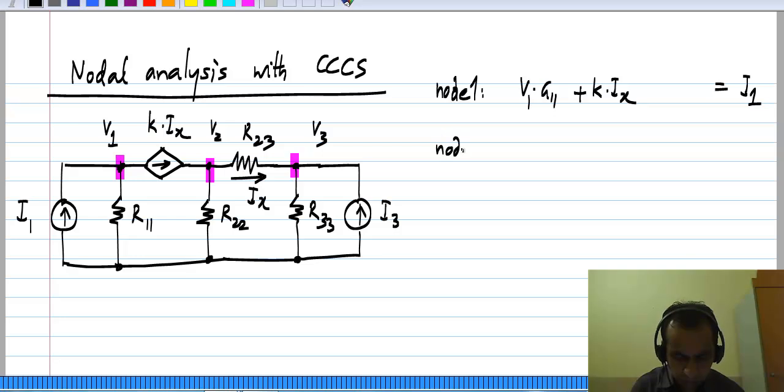Similarly, for node 2 I have to take the currents flowing away from the node. I have the usual terms corresponding to resistors, which are V_2 times (G_22 + G_23) minus V_3 times G_23 to be equal to 0,